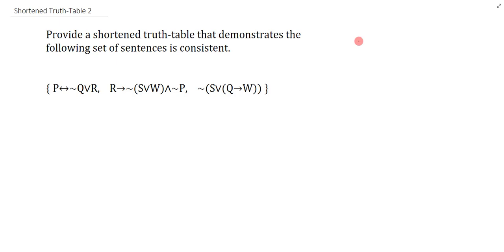This is a shortened truth table and in this question I need to demonstrate that the set of sentences is consistent. Consistency is important - you need to know what this property means. It means that all sentences can be true at the same time.